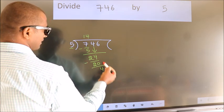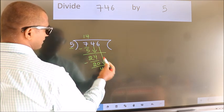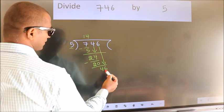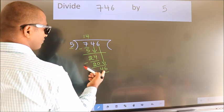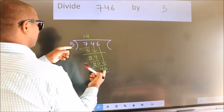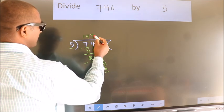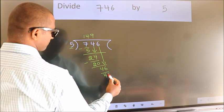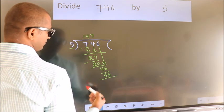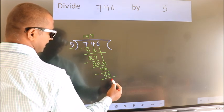After this, bring down the beside number. So, 6 down. So, 46. A number close to 46 in the 5 table is 5 nines 45. Now, we subtract. We get 1.